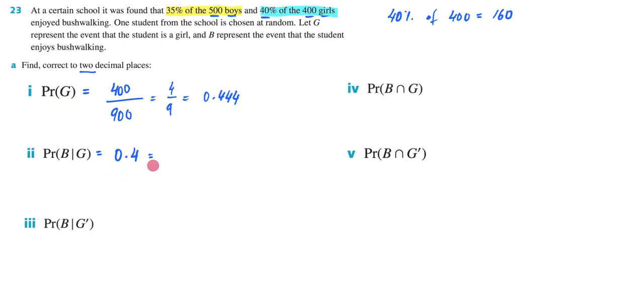So when we're figuring this out, what we're doing is saying, alright, we know that we're given girls. So we're no longer going to do it out of our total population. We're rather just going to say out of the girls. So it's going to be 400 instead of 900. And we know that 160 of them enjoy bushwalking. So it's going to be 160 over 400, which equals 0.4. So this is kind of the thinking that goes behind it.